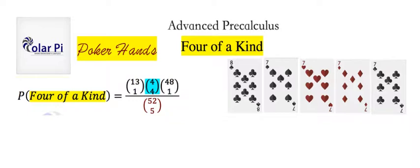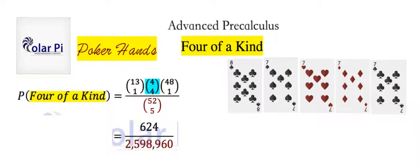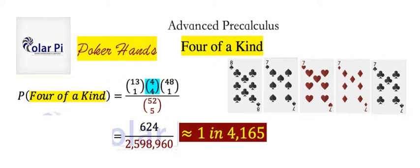Now, if we compute these numbers, the numerator turns out to be 624. And so this is about one in 4,165. So very rare.